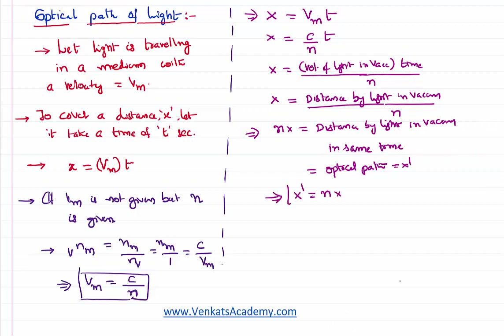That is what is actually called the optical path of light — let us call it x'. I can write x' equals n times x, where x' is the optical path, x is the distance travelled by light in that medium, and n is the refractive index of that medium. This is what we mean by optical path.